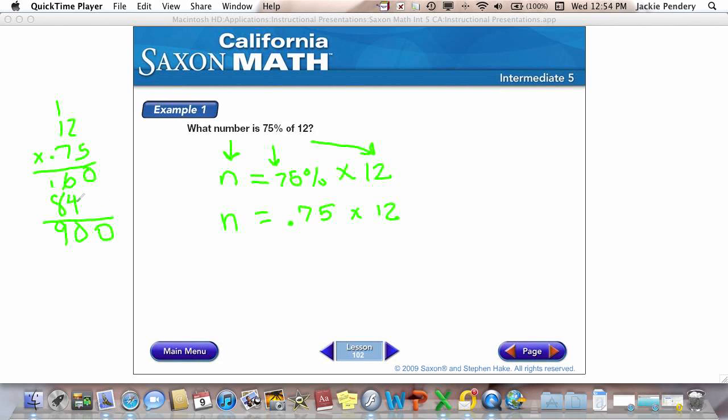Now that I've finished multiplying, I have to go back and look at my original problem and count the number of digits to the right of the decimal. Here I have two numbers to the right of my decimal, so I place my decimal at the end of my answer and move it two places to the left. So n equals 9. 9 is 75 percent of 12.